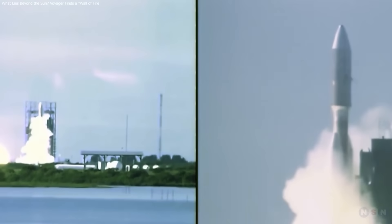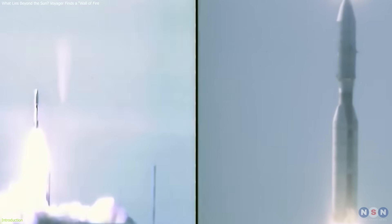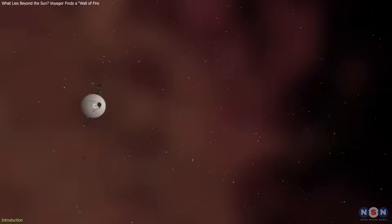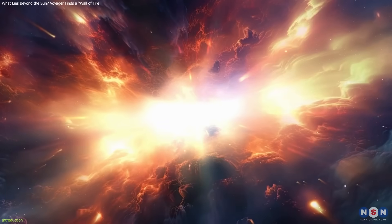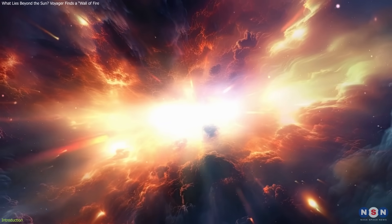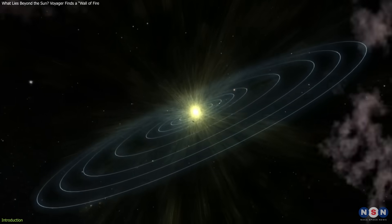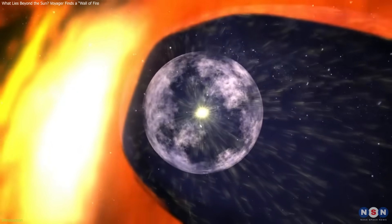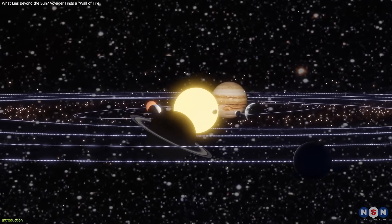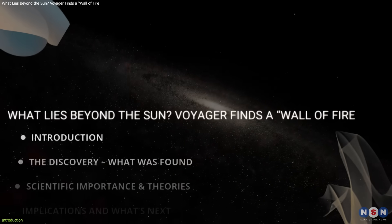In 1977, NASA launched Voyagers 1 and 2 to explore the outer solar system. Nearly 50 years later, they've detected a wall of fire, a superheated plasma zone, 54,000 to 90,000 degrees Fahrenheit, at the heliopause, where the sun's influence ends. This persistent feature, measured by both probes years apart, is reshaping our understanding of the solar system's boundary and its connection to the galaxy.